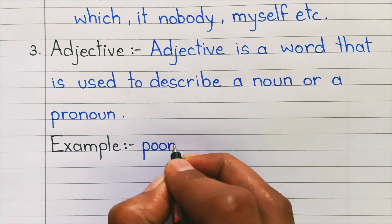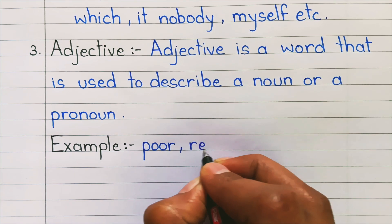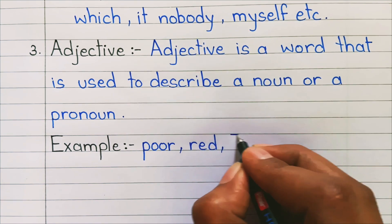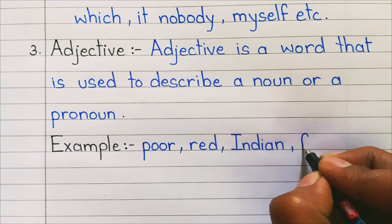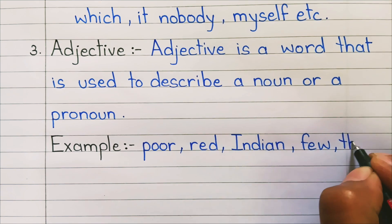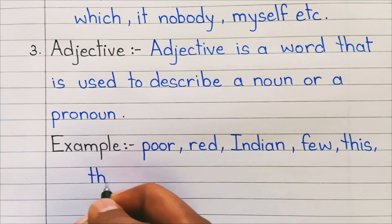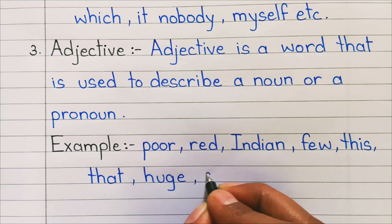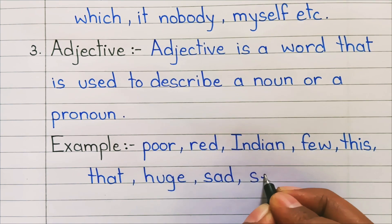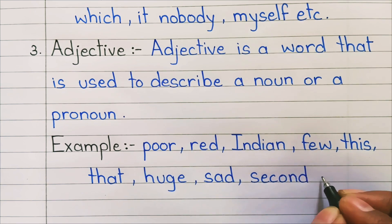3. Adjective: Adjective is a word that is used to describe a noun or a pronoun. Examples: poor, red, Indian, few, this, that, huge, sad, second, etc.